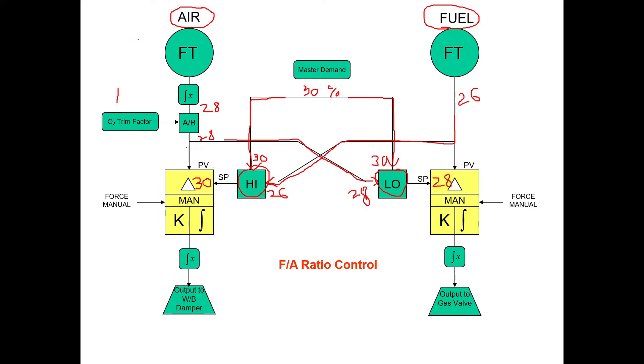So as you'll see, if 28 is registering as the PV into the PID controller and the logic has high selected 30, that's going to cause the output of the PID controller to go up to get the airflow to 30. In the meantime, what's going to happen over here is the fuel flow is coming in at 26. The set point is still 28, so the CV of the fuel control is going to go up.